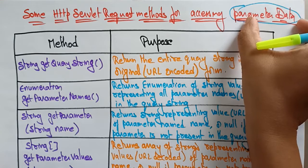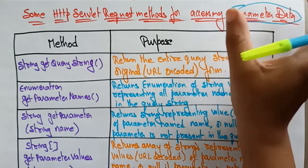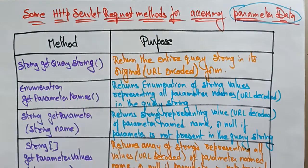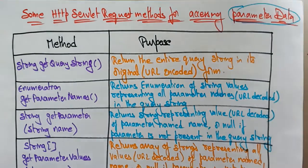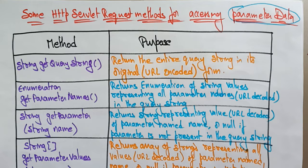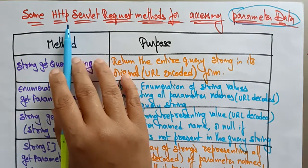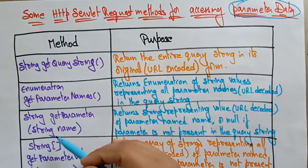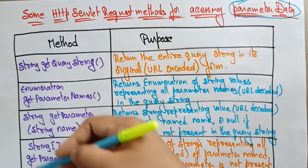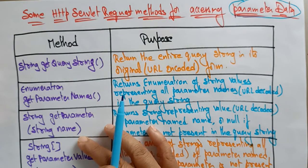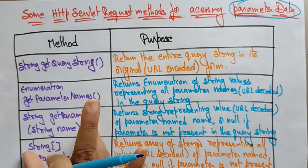I want to access this parameter data. There are some HTTP servlet request methods. The parameter data is present in the HTTP request — it is the most frequently used portion of the HTTP request. Let's see the different types of parameter data methods and what is the purpose of using them.